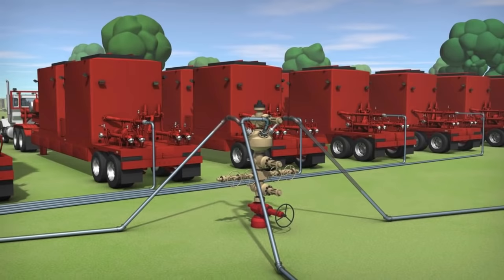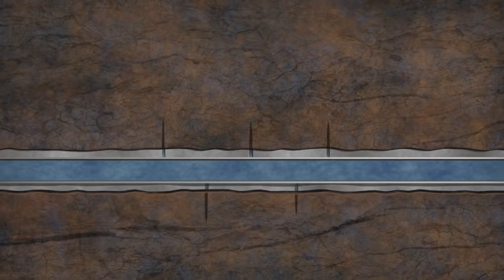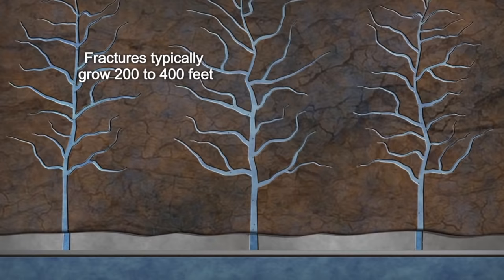This process fractures the rock, and the fractures are filled with sand in the fluid to prop the fractures open when pressure is relieved. This provides the trapped oil or natural gas a conductive flow path into the wellbore.